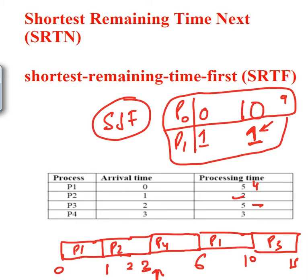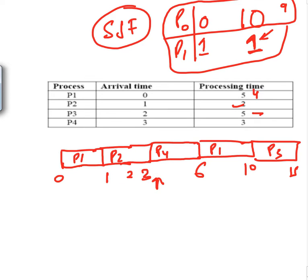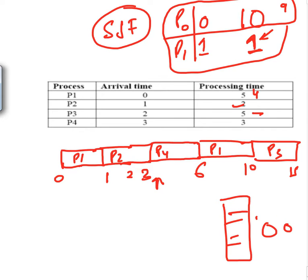Then P3 runs five units up to time fifteen. By doing this, the bigger job up front cannot hog the CPU, so the convoy effect is gone. Think of it like a convoy on a road — when a bike comes in, we stop the convoy, let the bike go, then carry on with the convoy. That's how the convoy effect is eliminated.